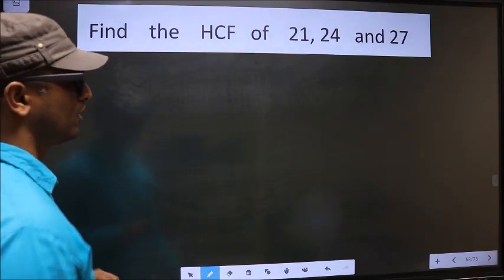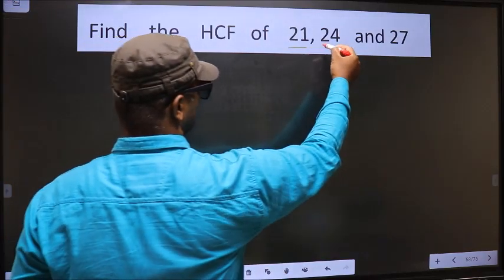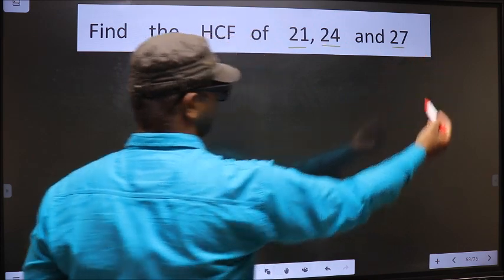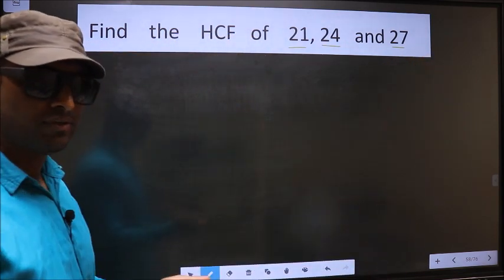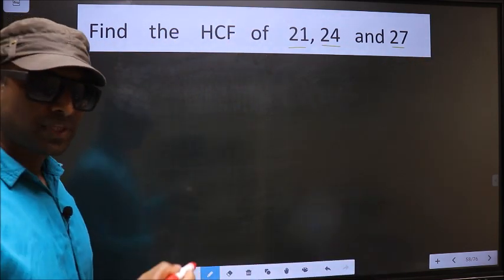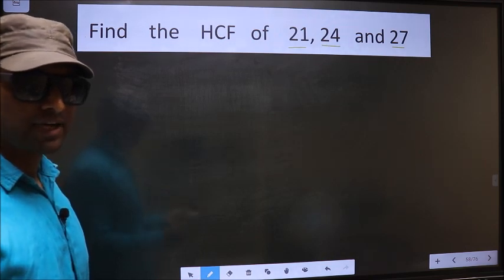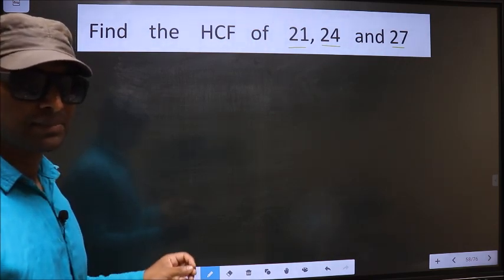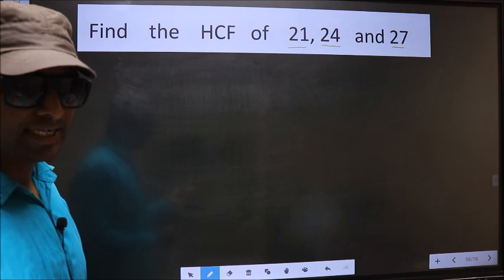Find the HCF of 21, 24 and 27. To find the HCF, first we should do the prime factorization of each number separately.